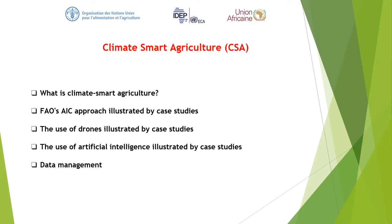Climate smart agriculture: what is it? We are going to respond to that question. The approach is illustrated by case studies. We'll also look at the use of drones — illustrated by case studies as well — which is really precision agriculture. And then the use of artificial intelligence, again illustrated with case studies in subsequent slides, as well as data management.